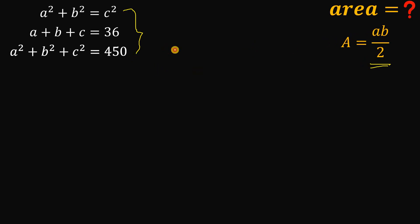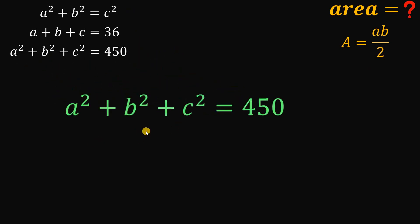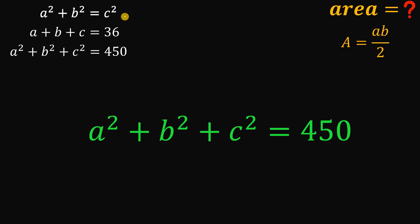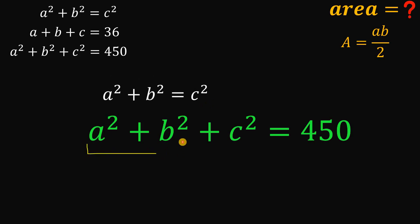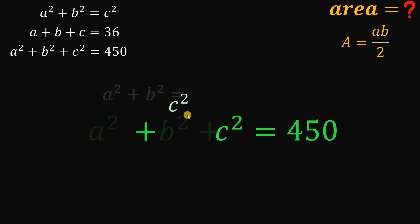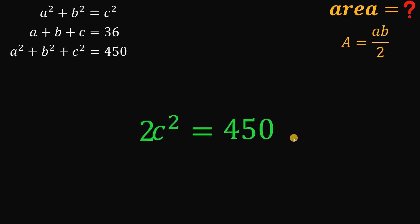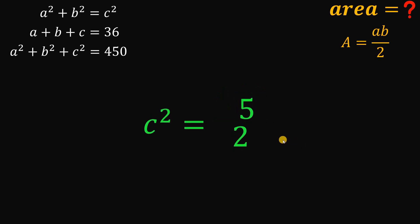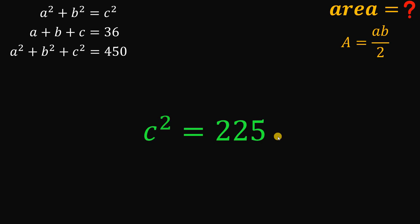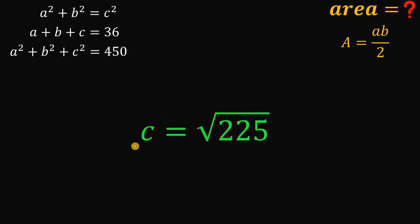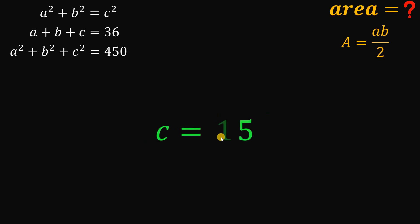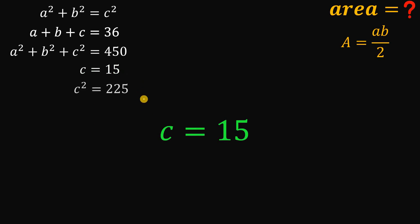To find the value of AB over 2, we will use the third equation: A squared plus B squared plus C squared equals 450. Using the Pythagorean theorem, we know A squared plus B squared equals C squared, so we can replace A squared plus B squared with C squared, giving us 2C squared equals 450. Dividing both sides by 2, we get C squared equals 225, and taking the square root, C equals 15.